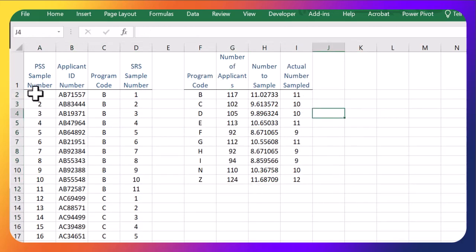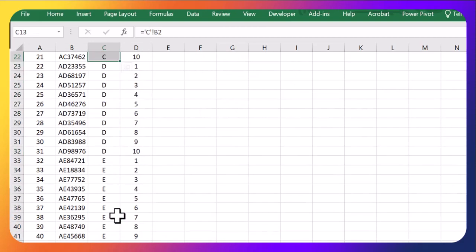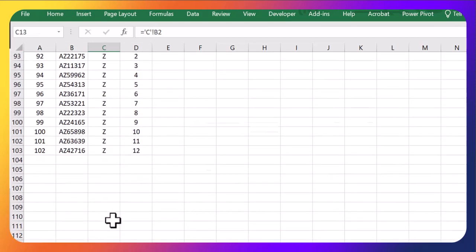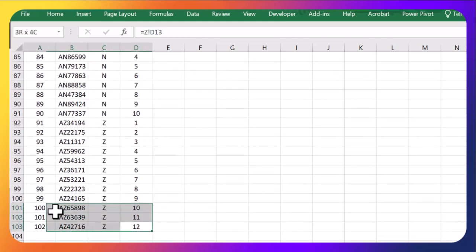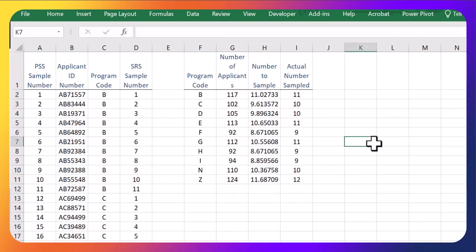And then I went and compiled this all into one sample here where I have the 11 from program B, 10 from program C, and so on and so forth. And this becomes your proportional stratified sample where you grab these individuals or these applicant numbers from each of the groups. And it is random, but random from each strata and proportional to how many there are in each group.